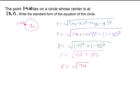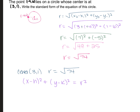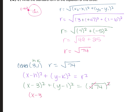Your center is (3, 1) and your radius is √74. Using the equation of a circle: (x − h)² + (y − k)² = r², with h = 3, k = 1, and r = √74. Plugging in: (x − 3)² + (y − 1)² = (√74)². The power cancels out the radical, leaving (x − 3)² + (y − 1)² = 74.